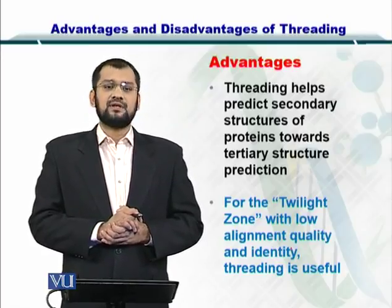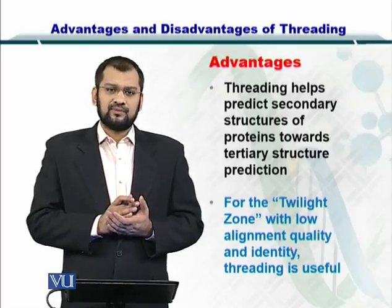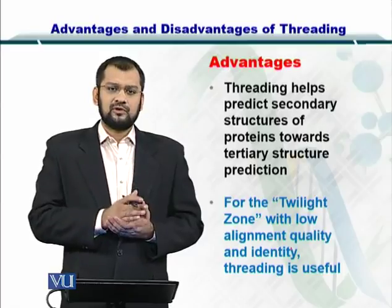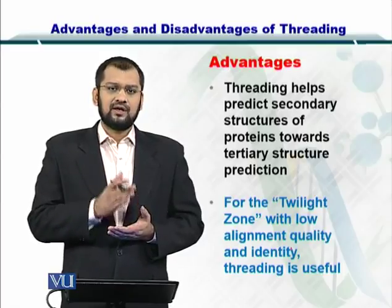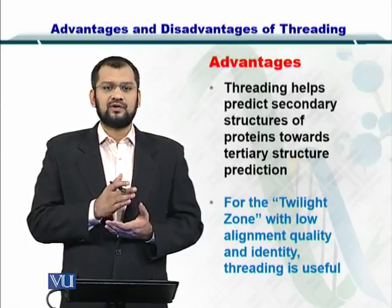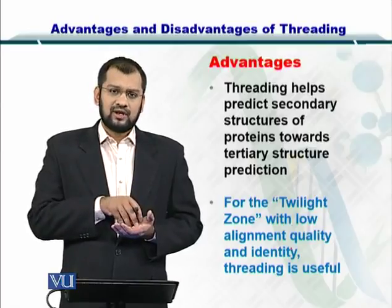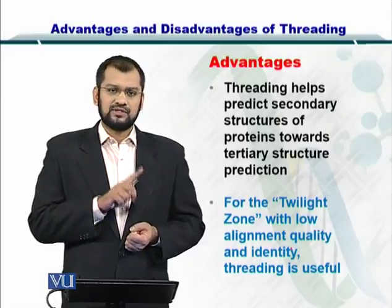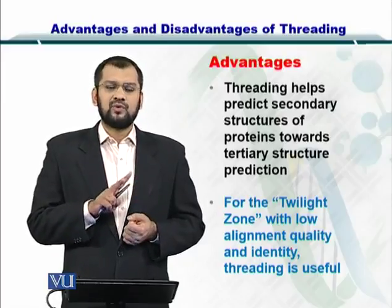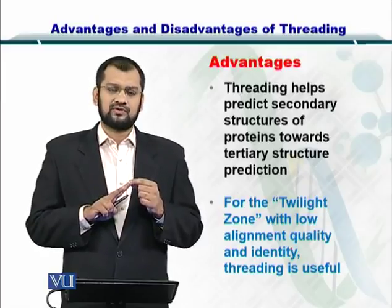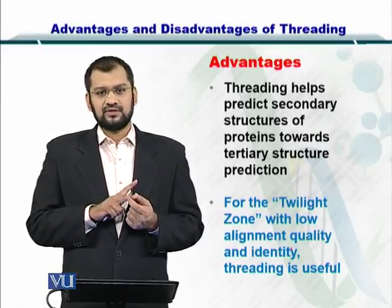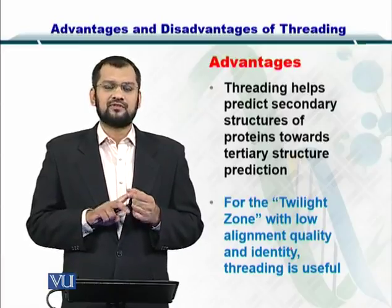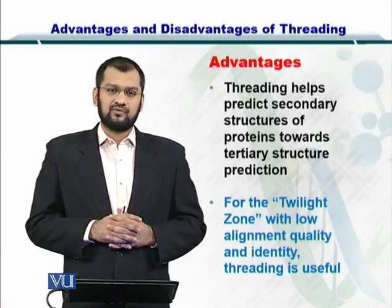As mentioned, for the twilight zone in the alignment versus identity graph, if there is low alignment and low identity, that is the twilight zone. In this twilight zone, you only have two options — you cannot use homology modeling. So the two options are fold recognition or threading versus ab initio. Between these two, threading is the simpler one and is more accurate as well.